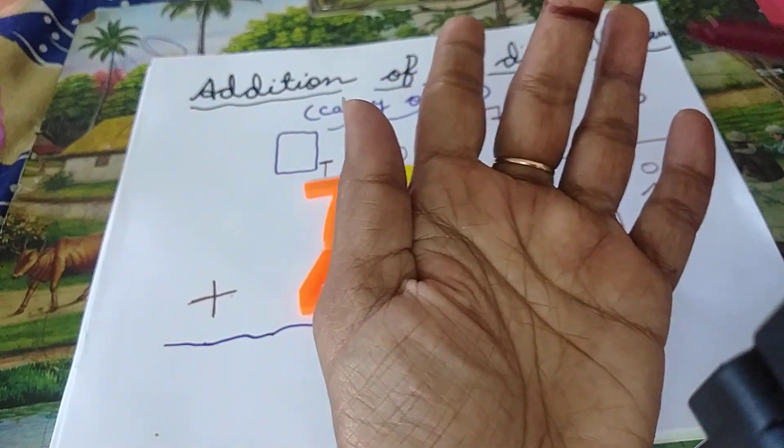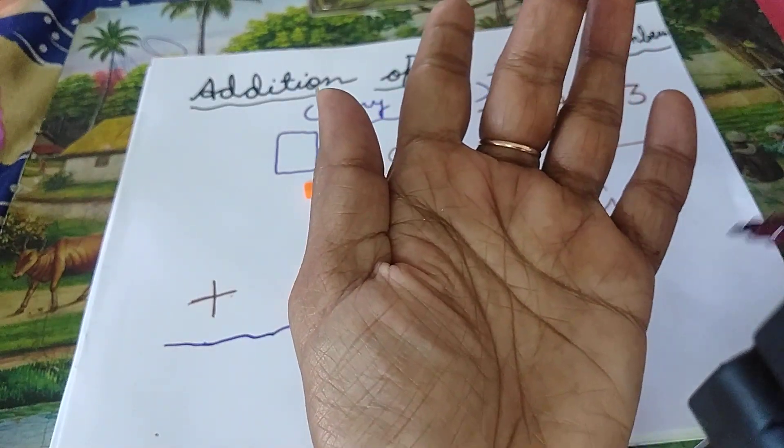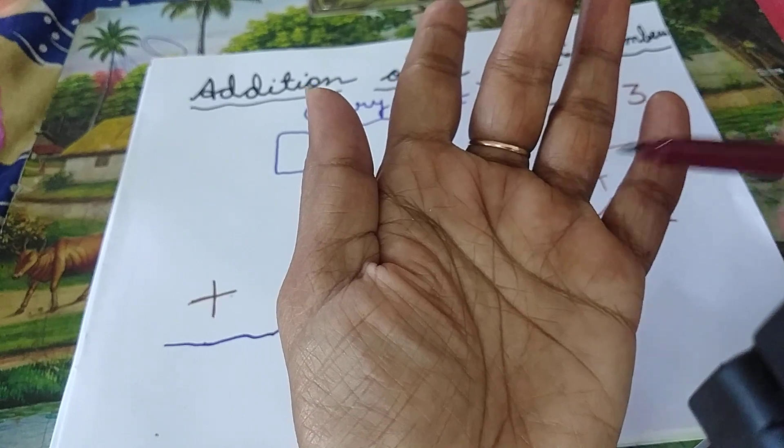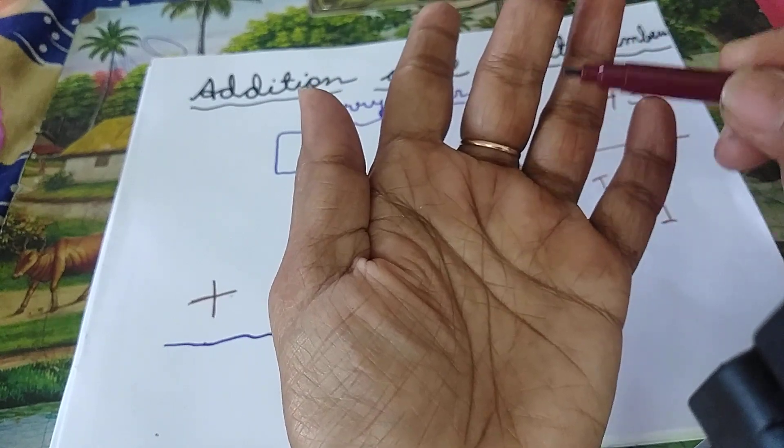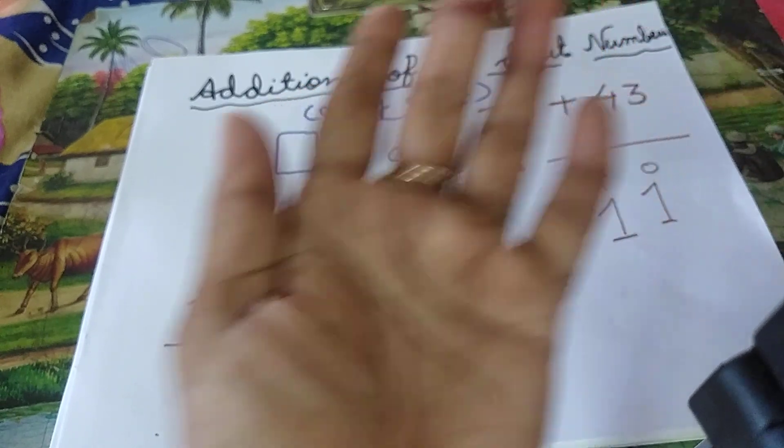See children, from here to here, how many lines are there? 1, 2, 3, 4, 5, 6, 7, 8, 9, 10, 11. 11.